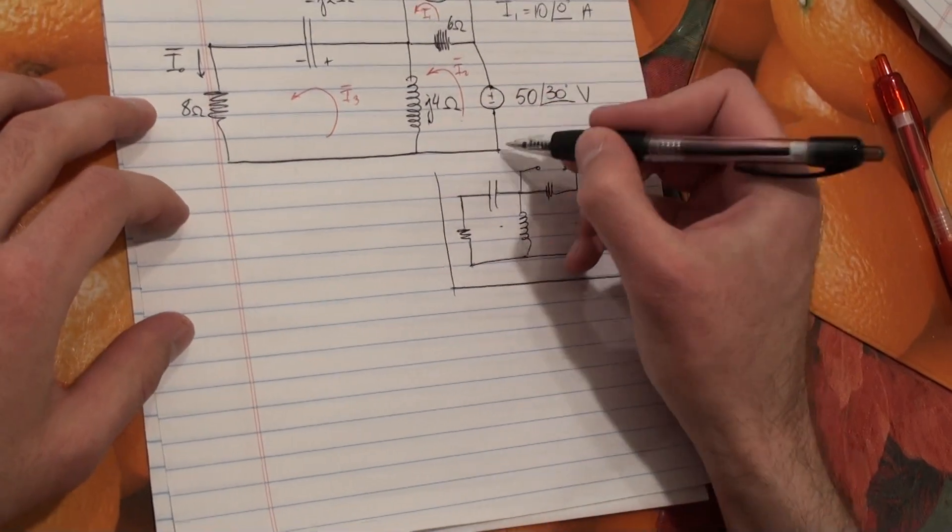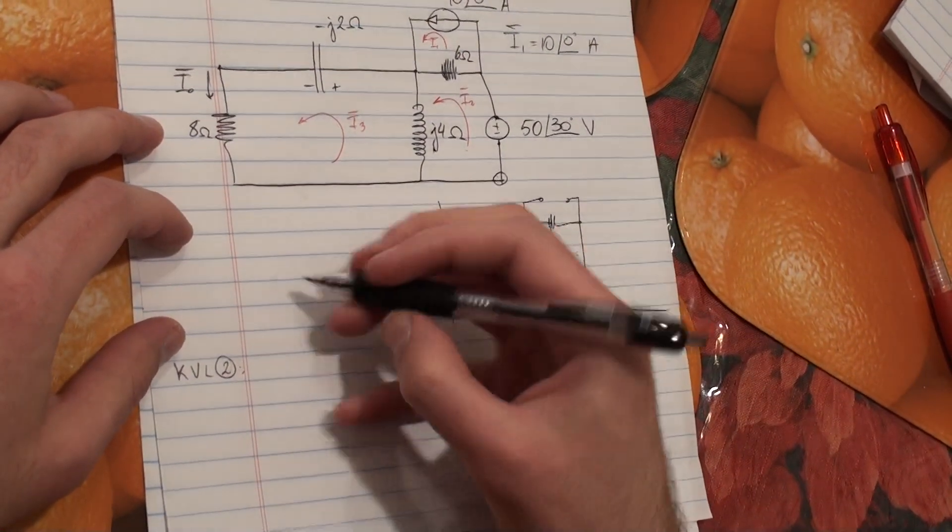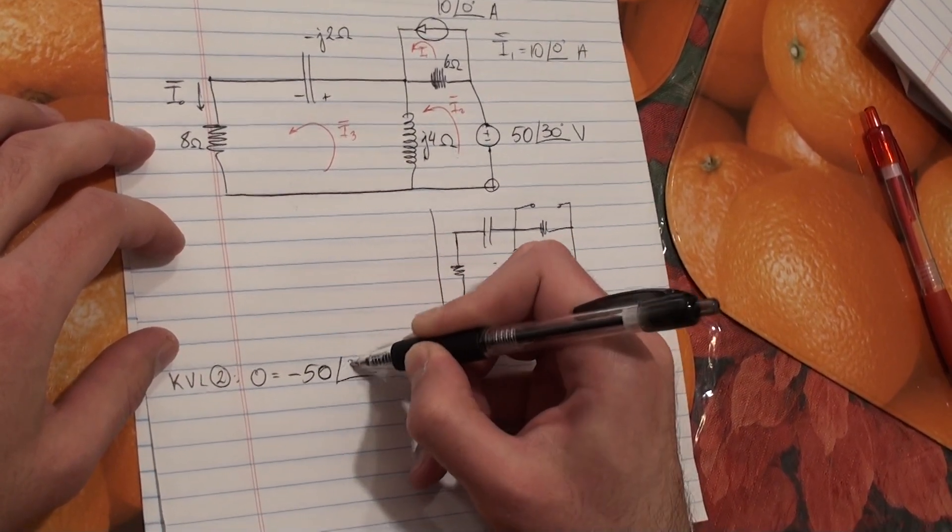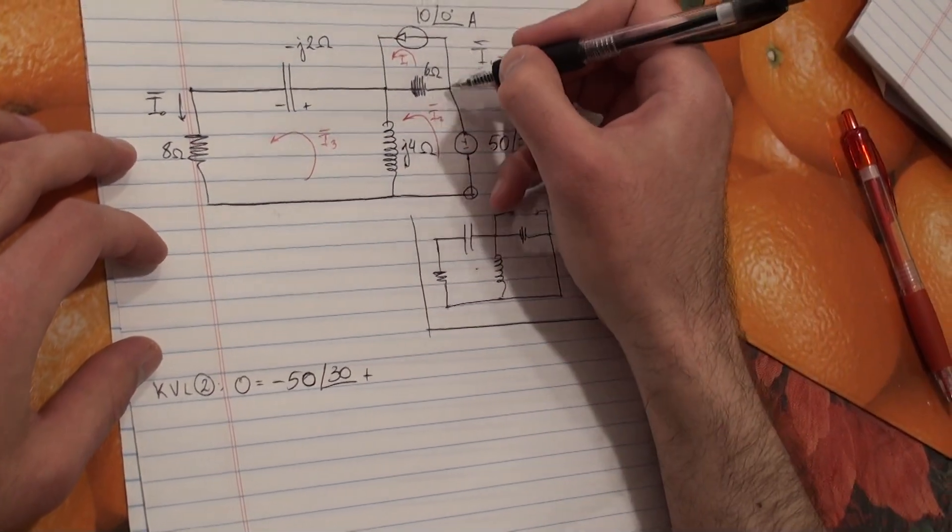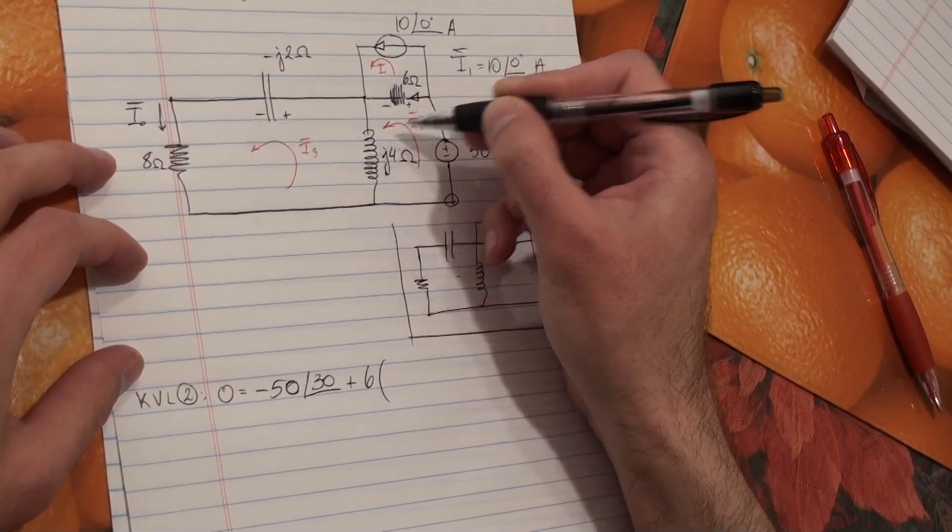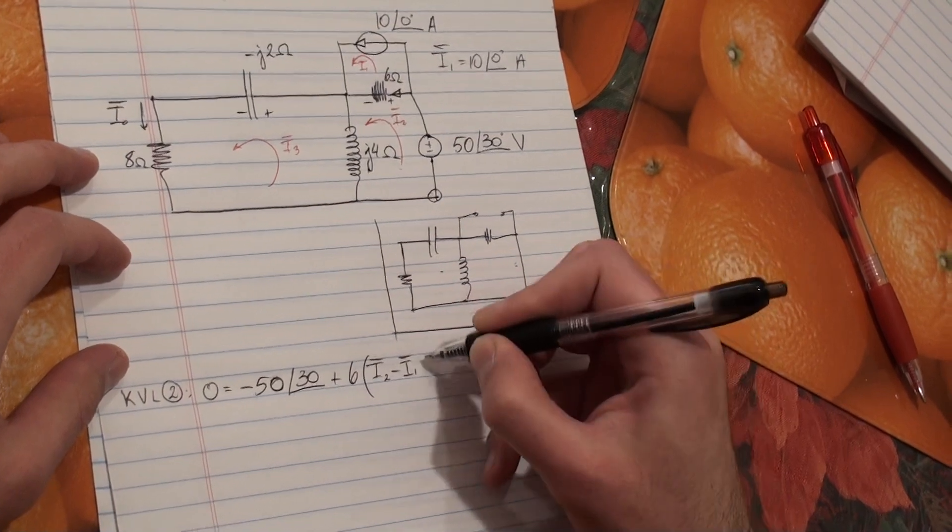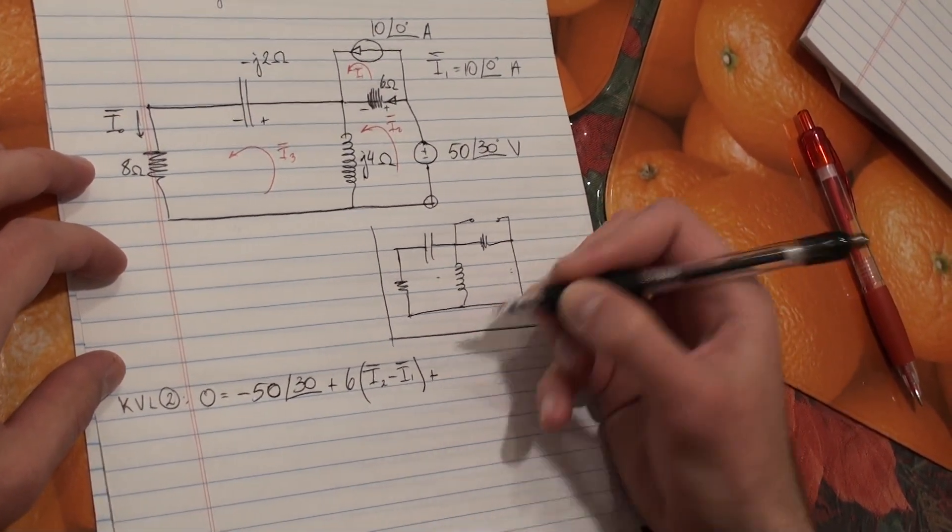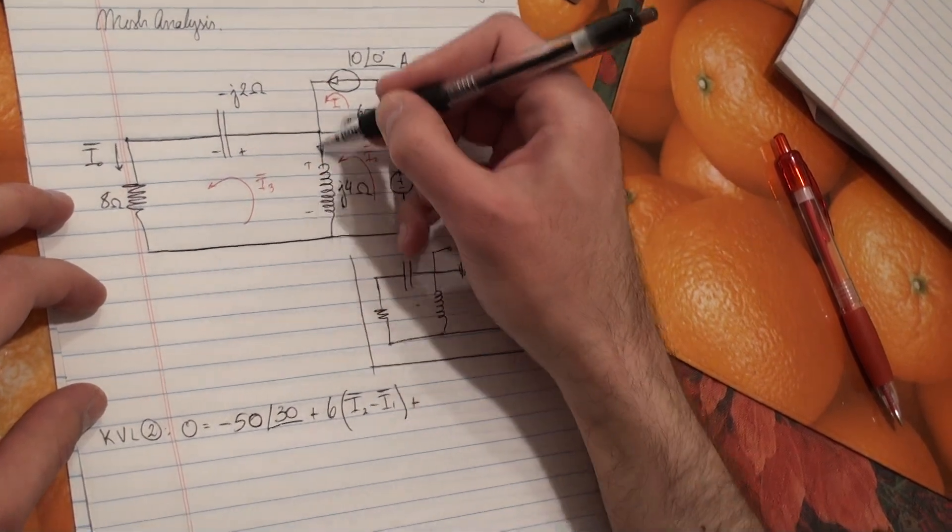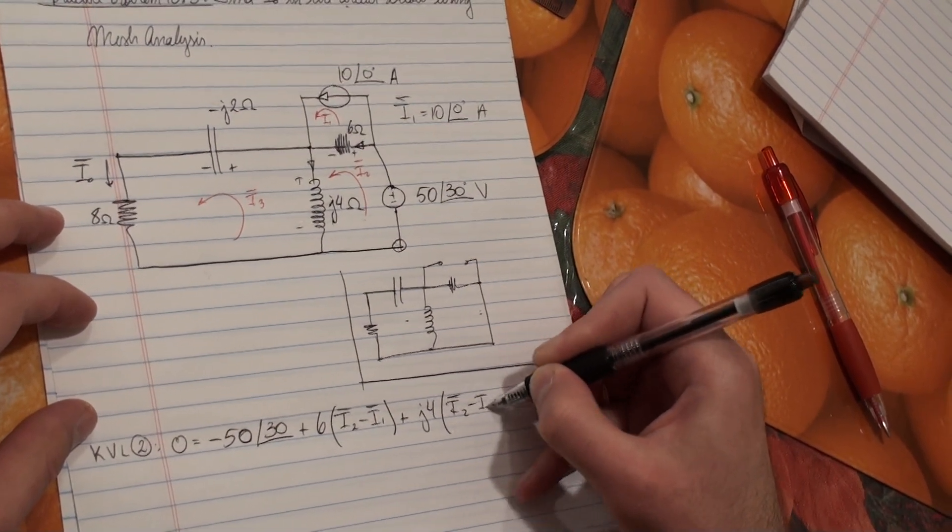So let's start by writing KVL here. I'm going to start at this node. So we have KVL for mesh number 2. So we're going to get 0 equals minus 50 at an angle of, this should be 50 at an angle of 30. Plus, I'm going to choose this current to go in this direction. So it's going to be 6 ohms times I2 minus I1. So we have to be careful with the direction.